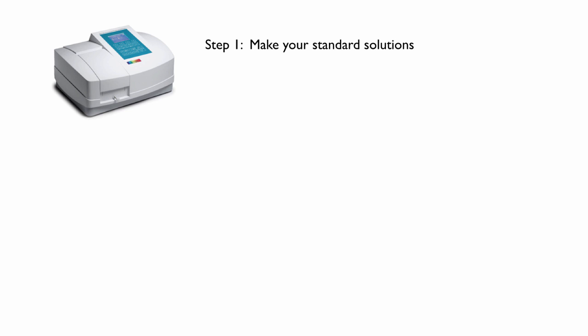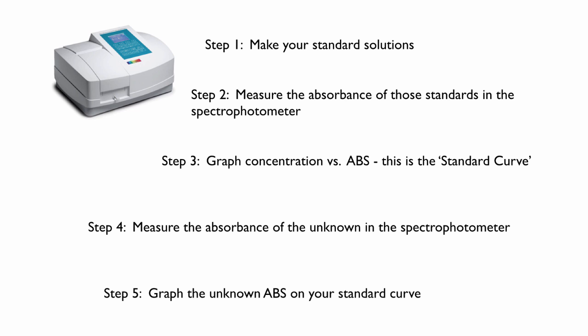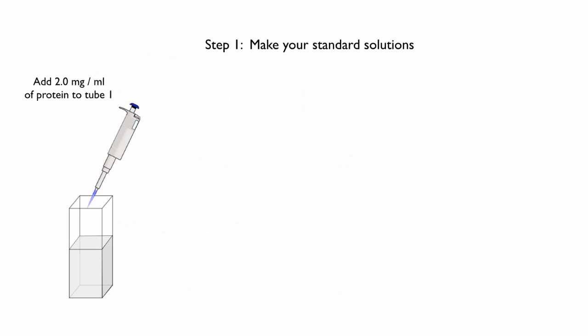Here are the steps for making your standard curve and finding the concentration of an unknown. You're going to make the standard solutions, then measure the absorbance of those solutions in the spectrophotometer. Then you'll make a graph of concentration versus absorbance—that's called the standard curve. Then you'll measure the absorbance of the unknown you have, graph it, and determine the concentration. We're going to look at all five steps in an example.